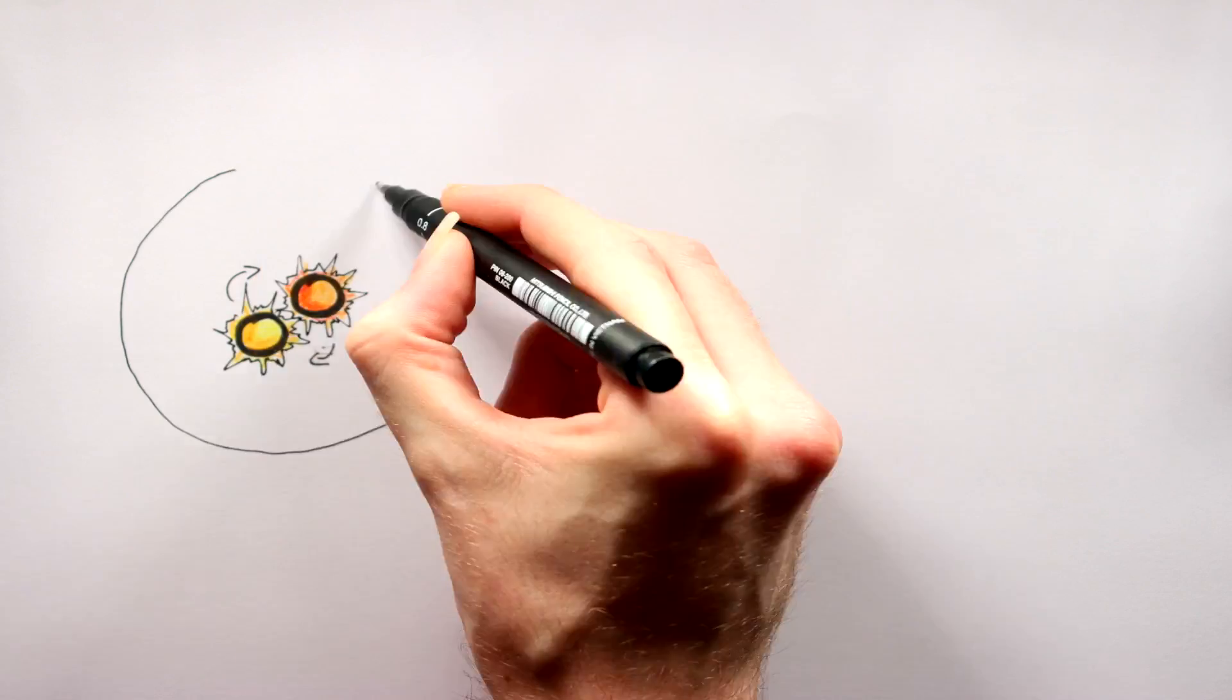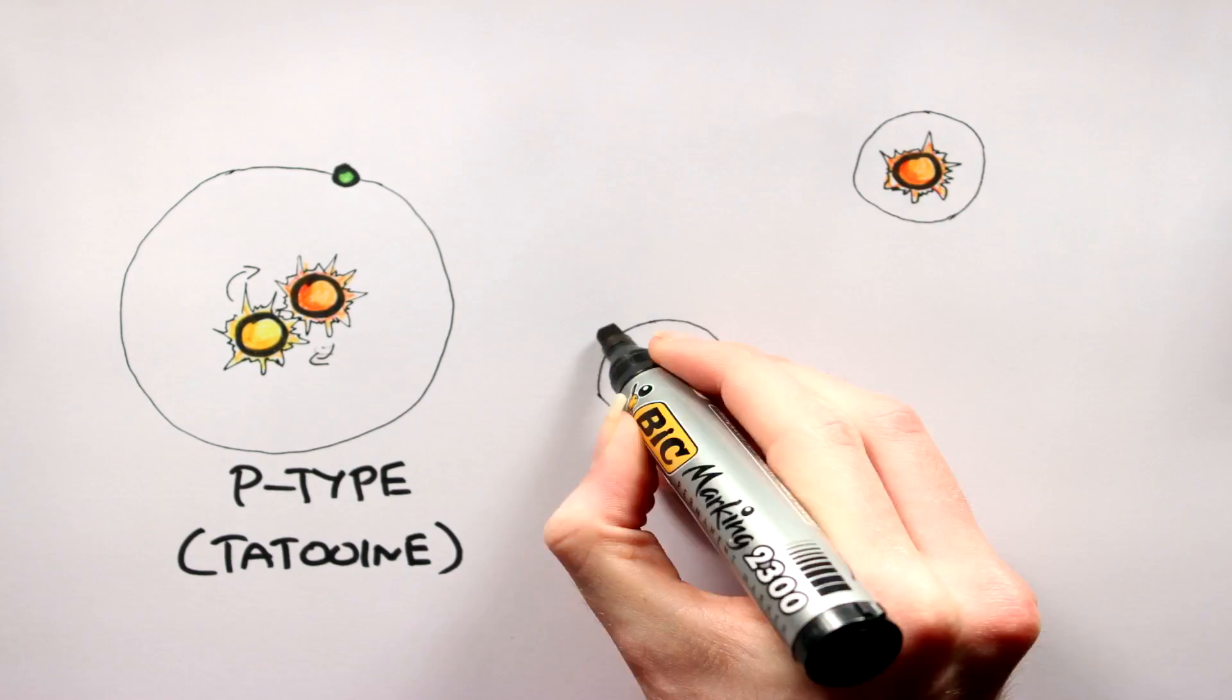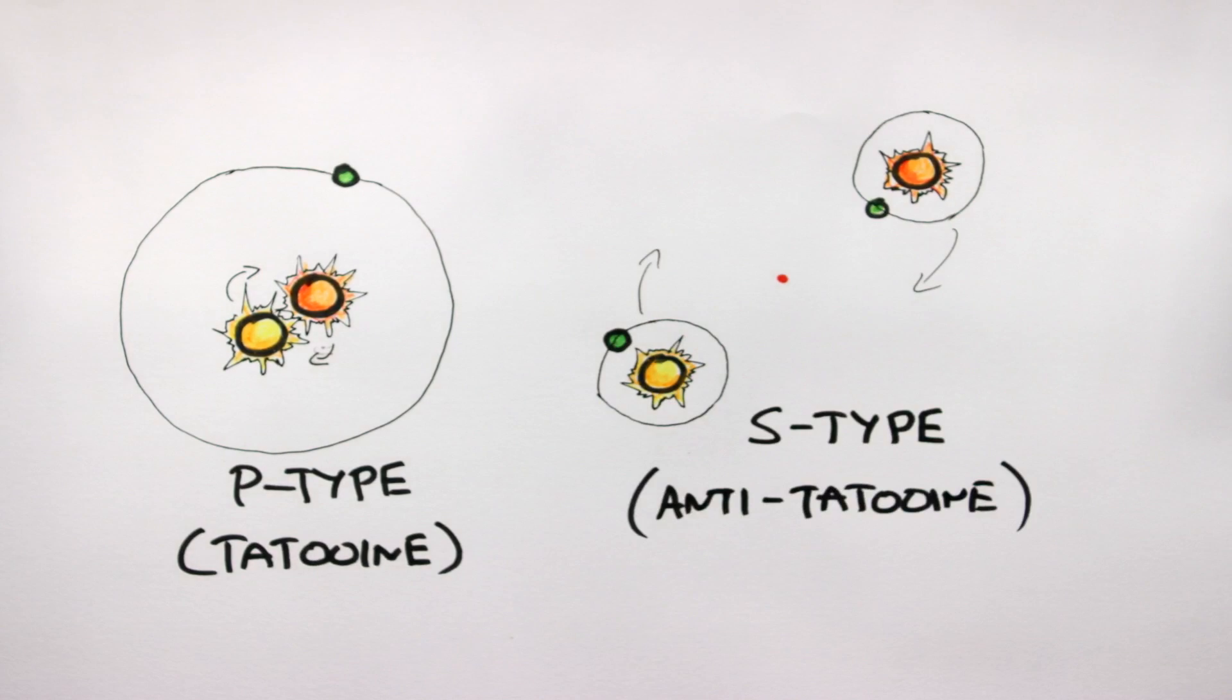So last time we looked at how to build a Tatooine-like system. This week however, let's look at building an S-type system.